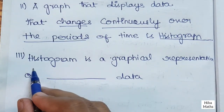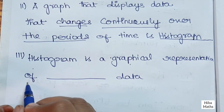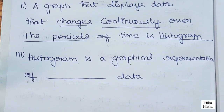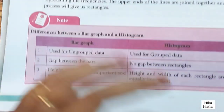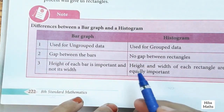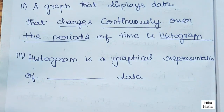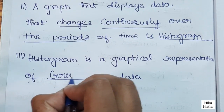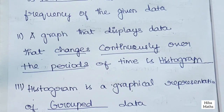The histogram is a graphical representation of grouped data. Histogram is used for grouped data. So, histogram is a graphical representation of grouped data. Thank you so much for watching.